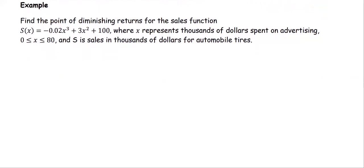In this example, we're going to find the point of diminishing returns for the sales function S(x) = -0.02x³ + 3x² + 100, where x represents thousands of dollars spent on advertising, 0 ≤ x ≤ 80, and S is the sales in thousands of dollars for automobile tires.